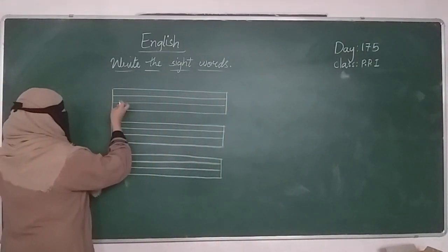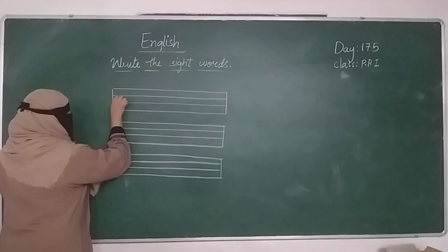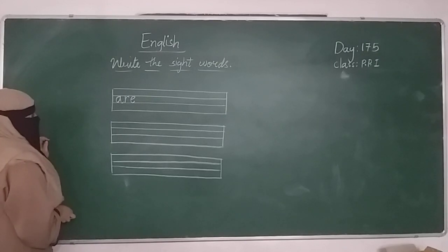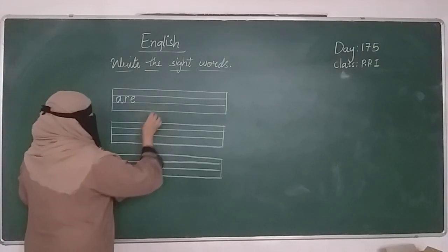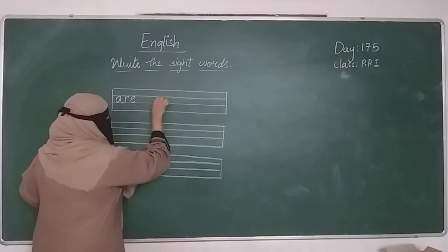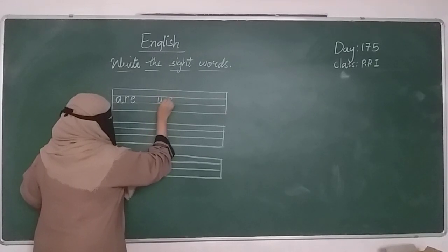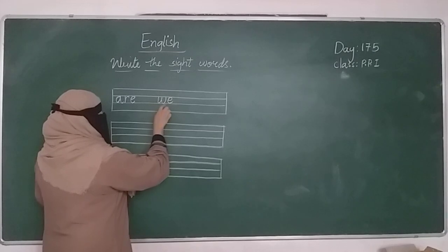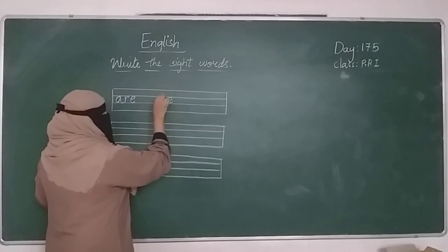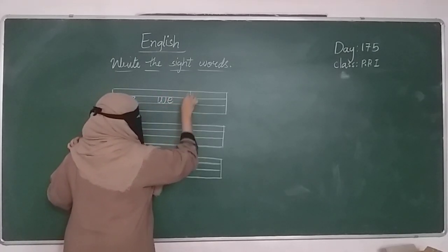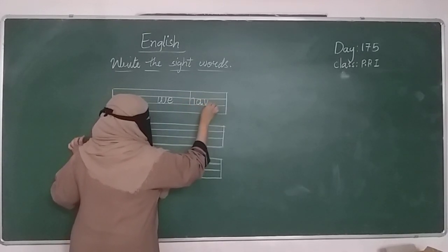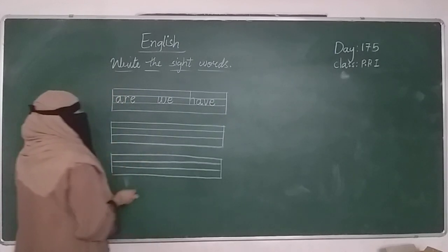Look at the words. A, R, E. Okay? W, E. How to pronounce these two letters? W, E. H, A, V, E. Have.